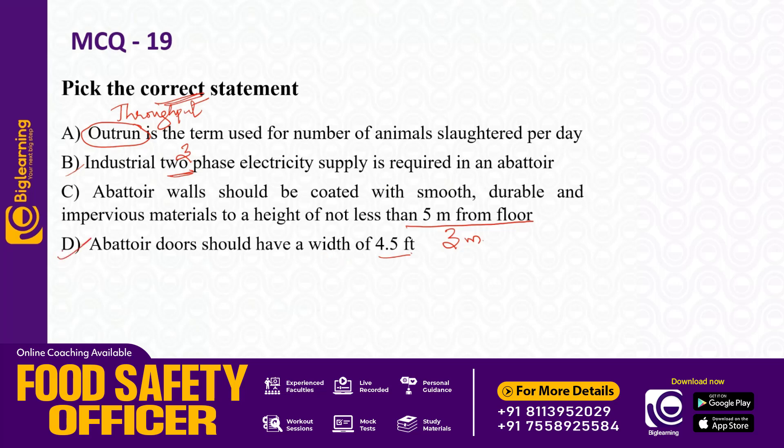Abattoir doors should have a width of 4.5 feet, which is equal to 1.37 meters.